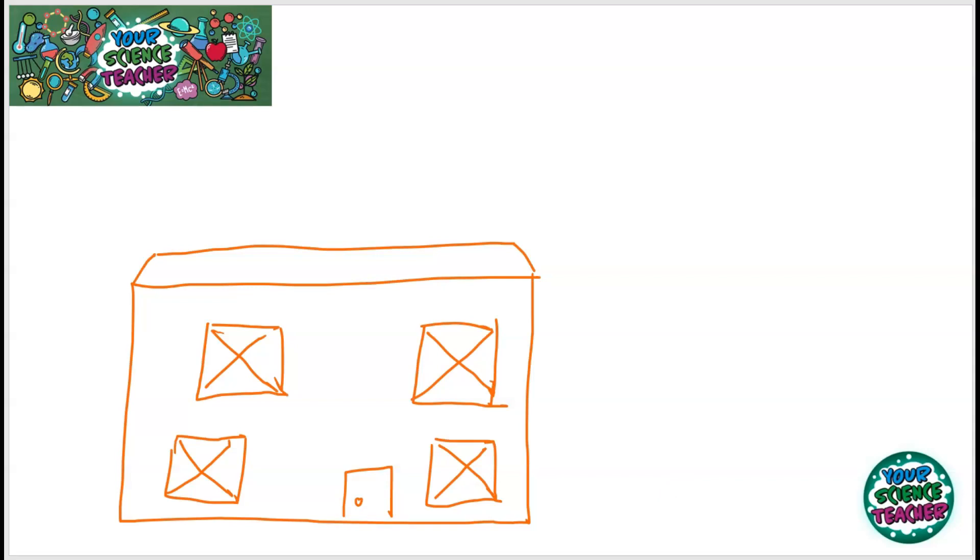Now, here is a very interesting drawing that I've drawn myself of a house. I know it's not the best drawing, but it will do. So, we'll look at the windows first. We can improve our windows to make them better insulators. We can install what is called double glazing. And double glazing is a better insulator than normal single glazing because of the fact it has air gaps.